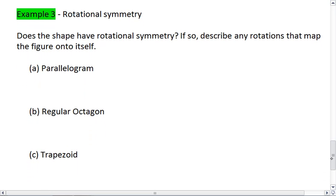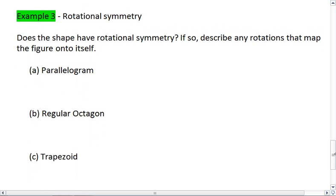Let's look at some other examples. Tell me whether or not the following shapes described below have rotational symmetries. If so, describe any rotations that map the figure onto itself. So again, as we saw with the line of symmetries, we can have multiple rotations of symmetry, or we could have just one, or we could have none.